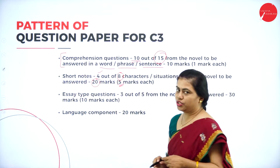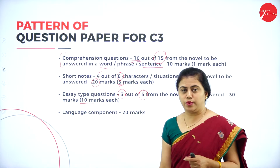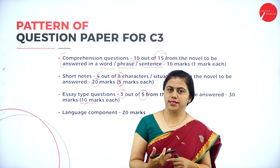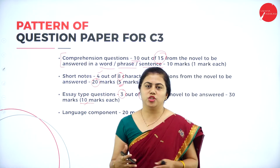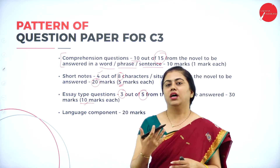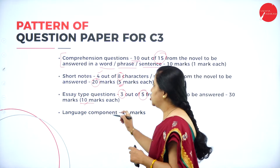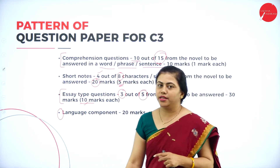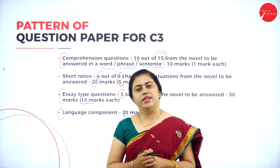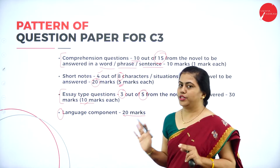Out of 8, you choose and answer only 4, which is 5 marks each — altogether 20 marks. Next we have essay type questions: 5 questions of 10 marks will be given and you have to answer only 3, making it 30 marks. You have to write long answers — maybe a page or one and a half pages. It is good that you read the whole novel, as that gives you a hold over the content. At last, we have the language component for 20 marks, covering adverbs, active and passive voice — the grammar portion will be completely here.